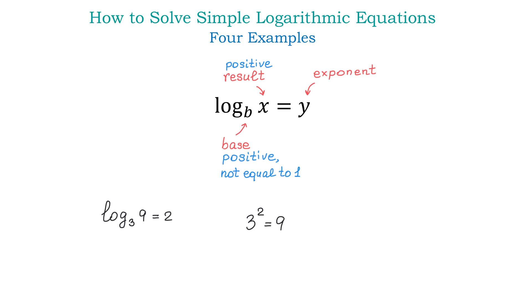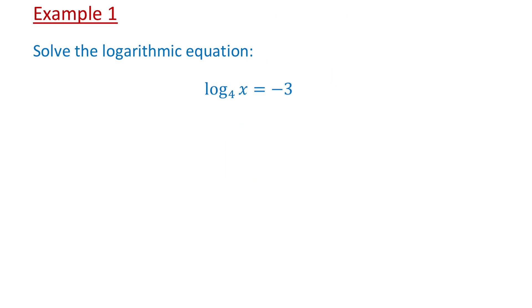We can start solving the first example. Here we will solve the logarithmic equation log base 4 of x equals negative 3. In this equation, we know the base and the exponent, and we have to find the result. To solve this equation, it will be convenient to rewrite it in exponential form — that is, the base 4 raised to exponent negative 3 equals the result x.